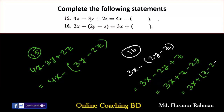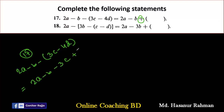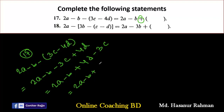Now number 17. Number 17 says: 2a minus b minus (3c minus 4d). After b there is a positive sign, so we rearrange. Removing brackets: 2a minus b, minus into 3c gives minus 3c, minus into minus 4d gives plus 4d. Rearranging to bring plus 4d after b: 2a minus b plus (4d minus 3c). That is the solution of number 17.